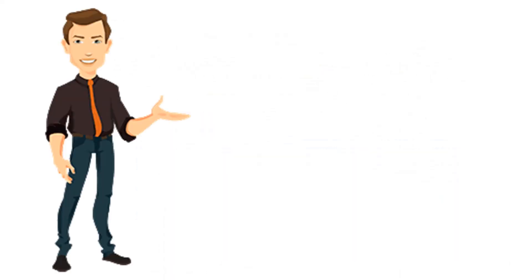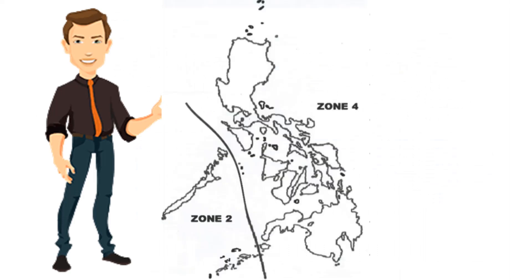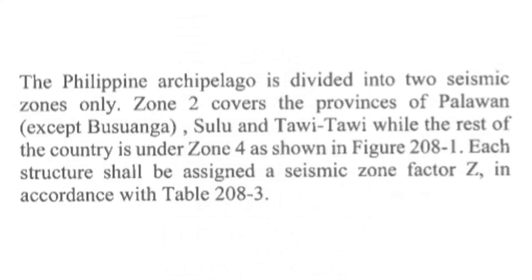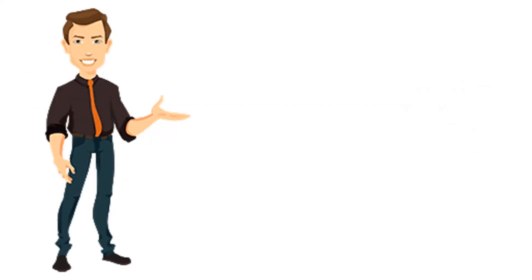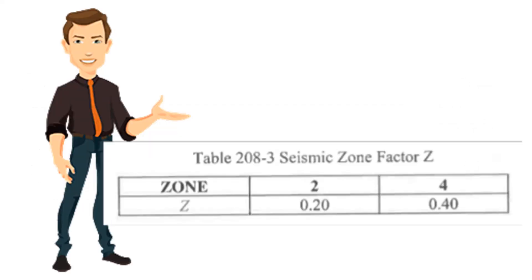Next is the seismic zone, found in Figure 208-1, the seismic map of the Philippines. Zone 2 covers the provinces of Palawan, Sulu, and Tawi-Tawi, while the rest of the country is under Zone 4. This is followed by the seismic zone factor.